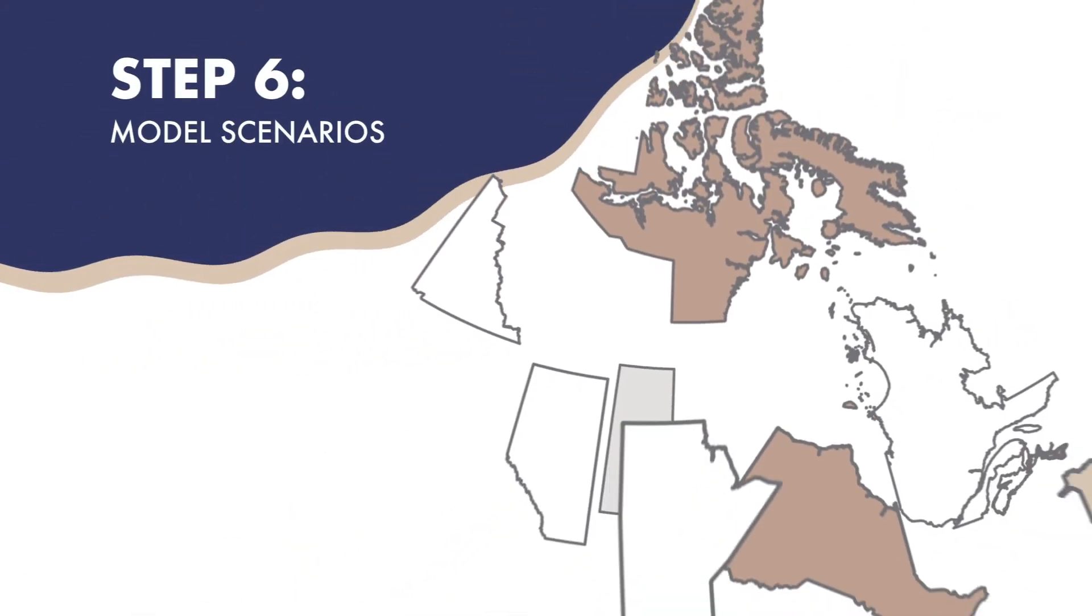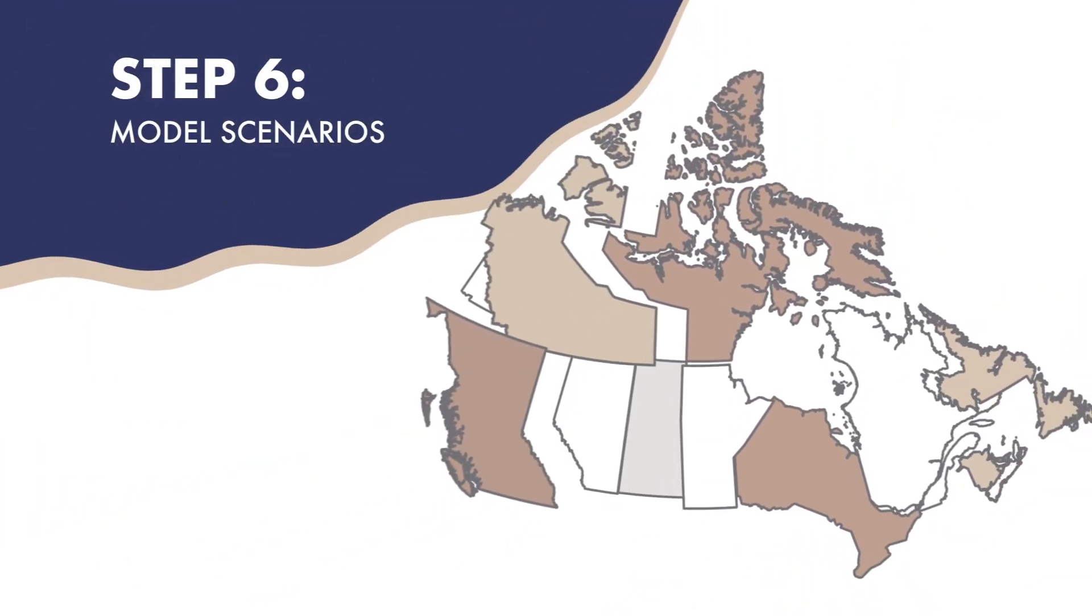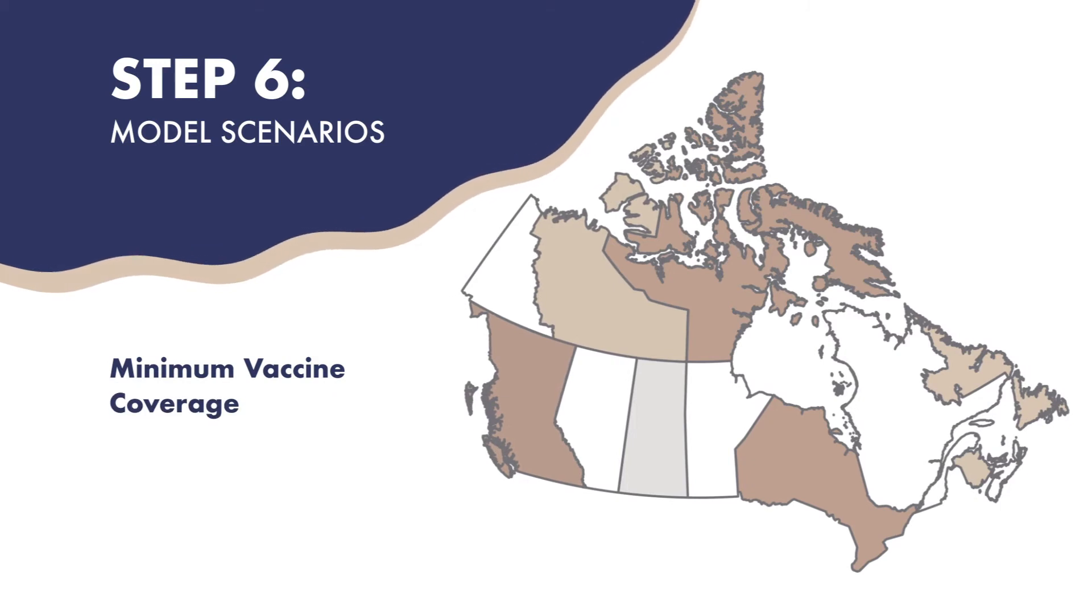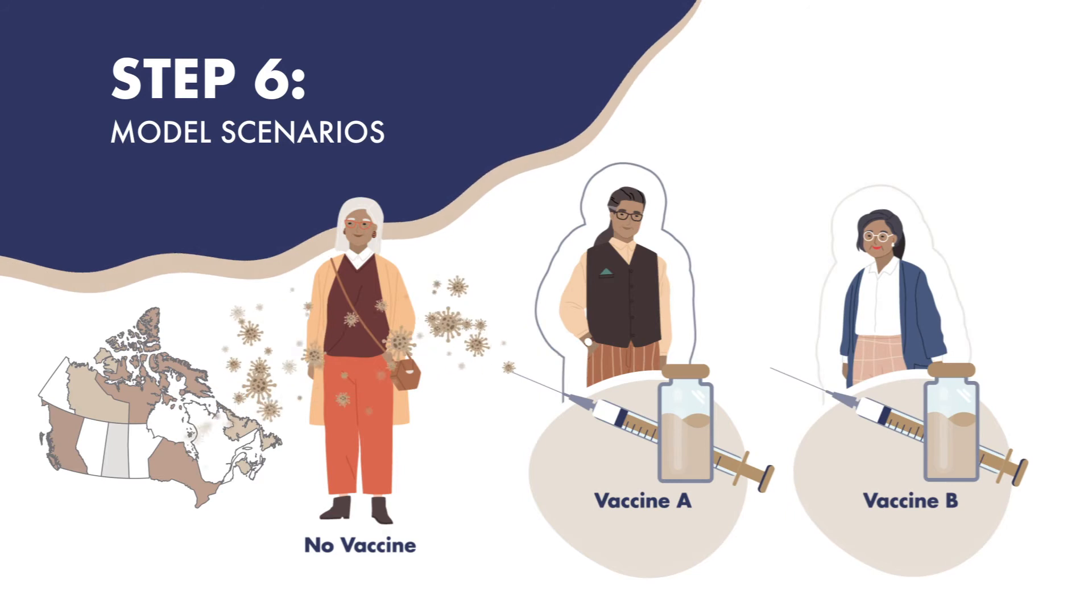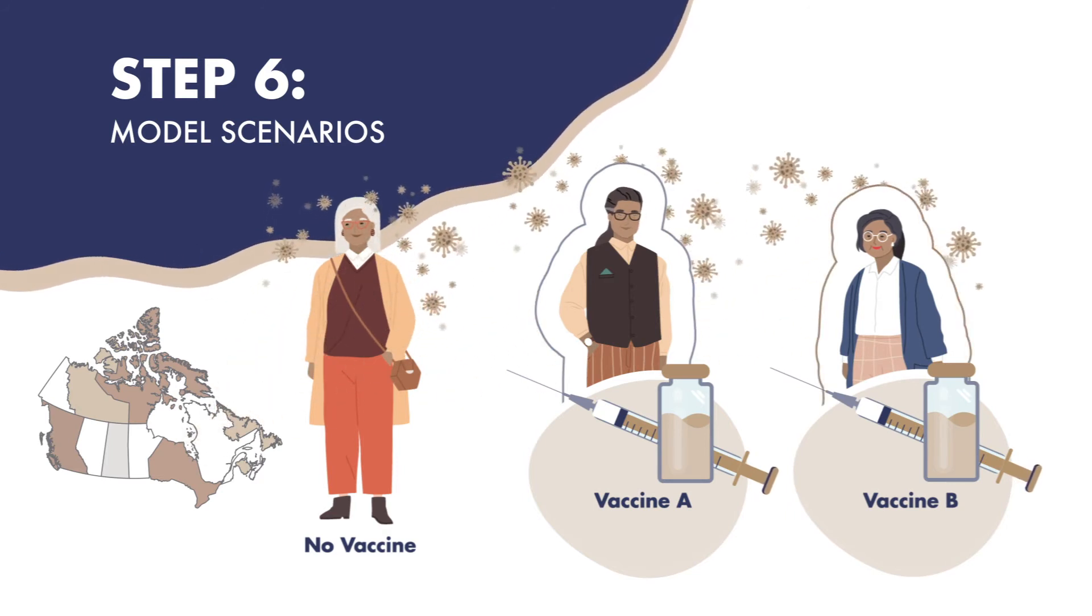Step 6: Model scenarios. We can explore the minimum vaccine coverage needed to significantly reduce influenza infection in the elderly population through adjustments to each vaccine scenario.